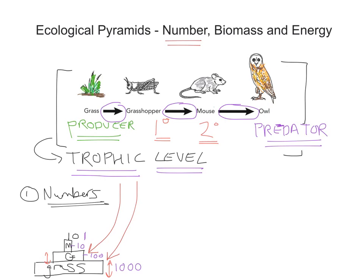If you wanted to take this further, you could actually give the numbers per metre squared or per metre cubed, if you're thinking about the number of organisms in a particular amount of habitat. I say metre cubed because when you think about aquatic organisms you tend to talk in volumes. But more often than not you tend to just see the actual numbers. Key thing is that the bars have the same height and are proportional in width, whether you use a linear or log scale.